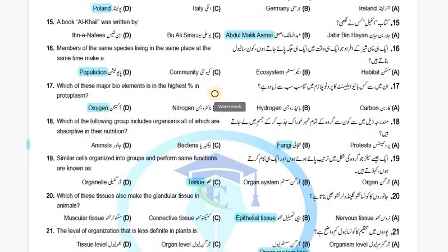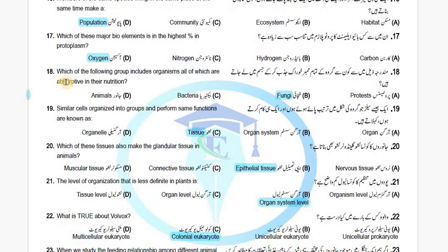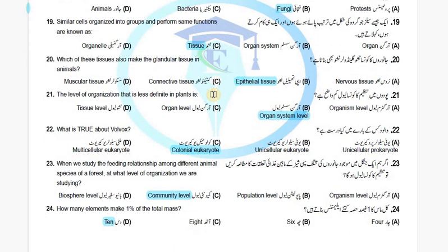Which of the major biological elements has the highest percentage in protoplasm? The answer is Oxygen — we have discussed this in past paper MCQs. Which of the following groups includes organisms all of which are absorptive in their nutrition? The answer is Fungi. Similar cells organized into groups that perform the same function are known as Tissue.